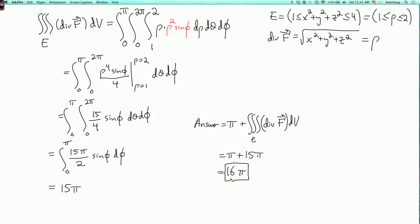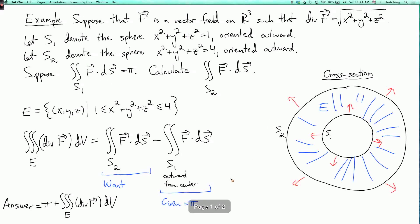So the key trick to remember is we want to relate the fluxes across the two surfaces. And we do that by integrating the divergence over the solid region that's in between the two surfaces. And we have to be very careful to get the orientations right. Otherwise, we're going to have some wrong signs in our formulas and we'll get the wrong answer.